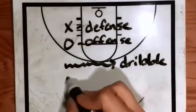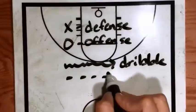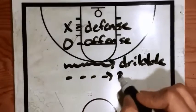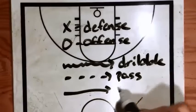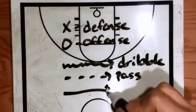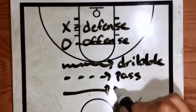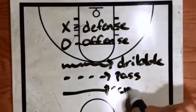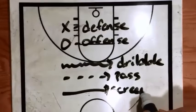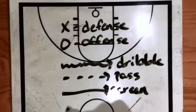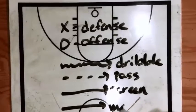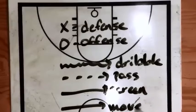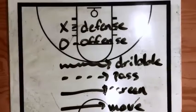A dotted line means pass, the line with a bar at the end of it is screen, and the line with an arrow at the end of it is move.